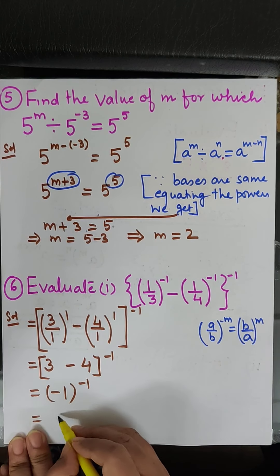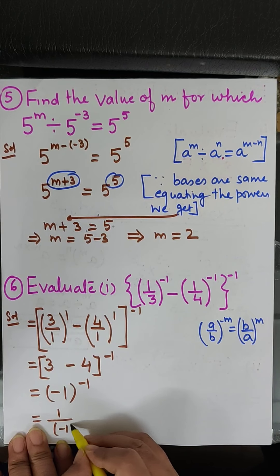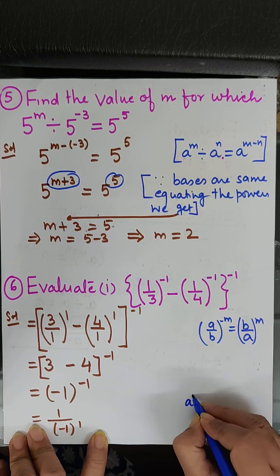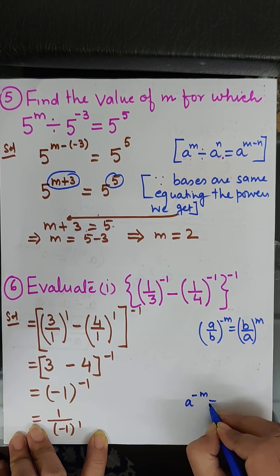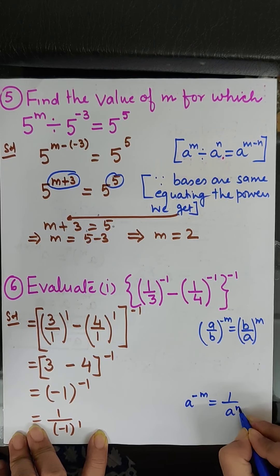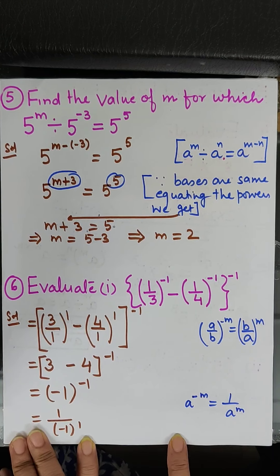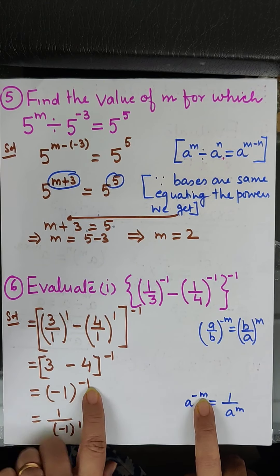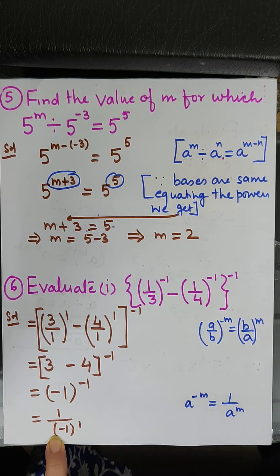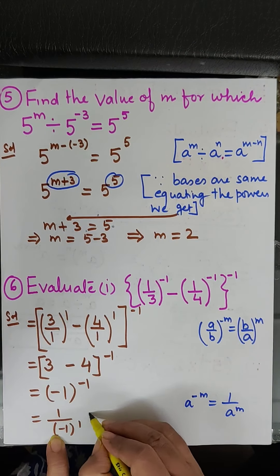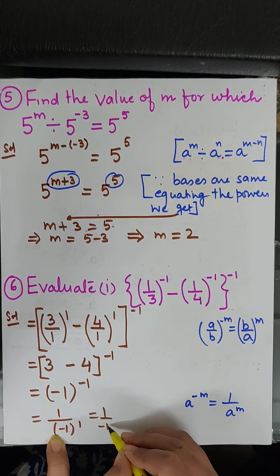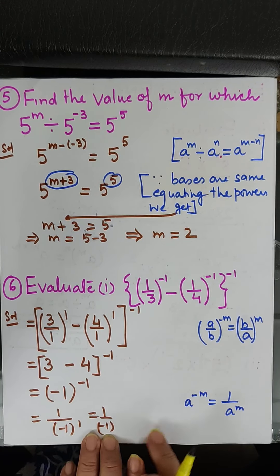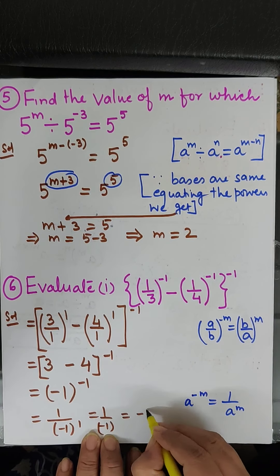Now this becomes 1 upon minus 1 raised to the power 1. Why? Because we use the law: a to the power minus m equals 1 upon a to the power m. Here a is minus 1 and m is 1. So we get 1 upon minus 1. The power 1 means it stays the same, and 1 upon minus 1 is minus 1.